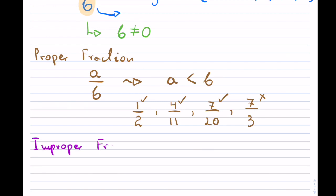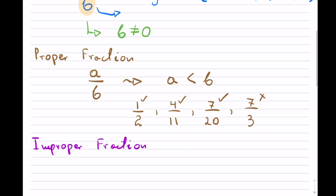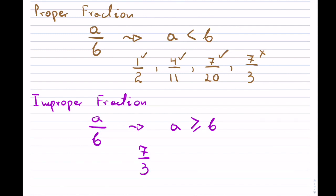An improper fraction is any fraction where A is bigger than or equal to B. For instance, 7 over 3 is an improper fraction because A is bigger than B. Now, 7 over 7 is also an improper fraction because they can be equal — so this works as well. 11 over 2 is also improper. I believe you get the gist of the difference between a proper fraction and an improper fraction.